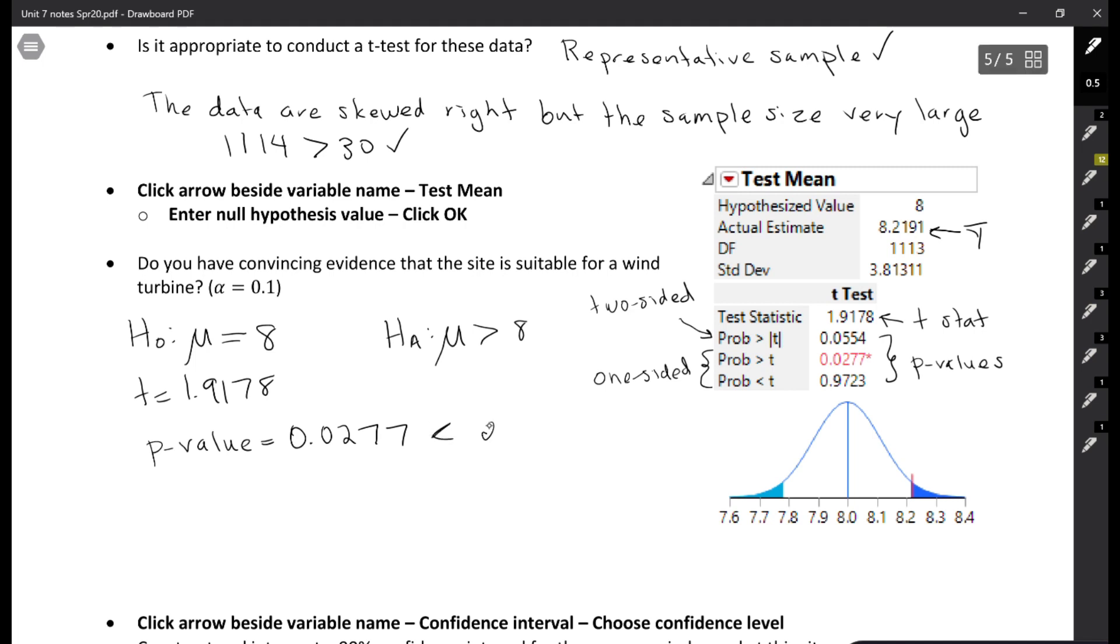It tells us that we should use 0.1 as our alpha. Our p value is less than that cutoff, so I would say that I have sufficient evidence to conclude the site is suitable for a wind turbine. In other words, that the average really is greater than 8. That's how I get my p value.